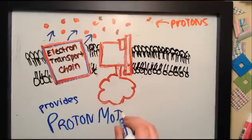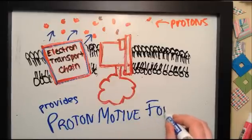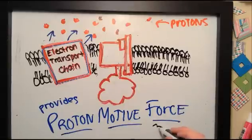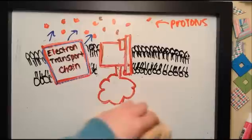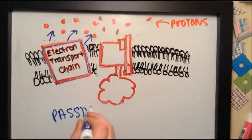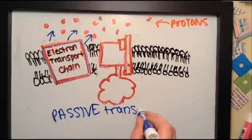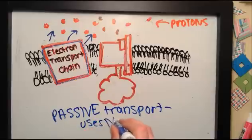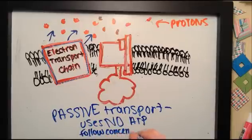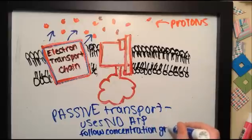This provides the proton motive force, or the concentration gradient, that moves protons into the ATP synthase without using up ATP. That would be counterproductive if it used up ATP as it synthesized it. That's why this is passive transport, which uses no ATP since it follows the concentration gradient.